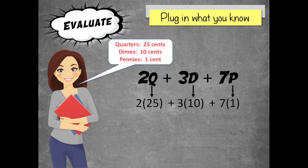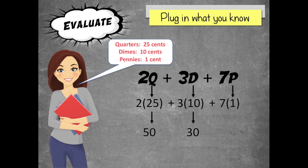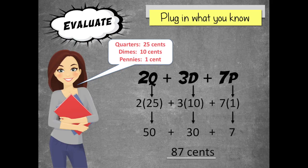I know that 2 times 25 is 50, 3 times 10 is 30, and 7 times 1 is 7. So I add all that up and now I know I have 87 cents. I've just evaluated that expression.